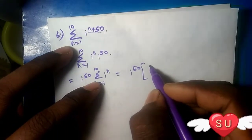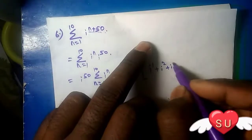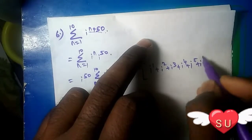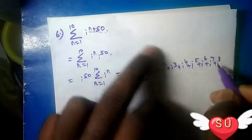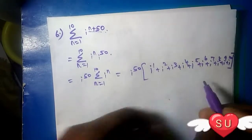Let's expand this: i^50 times (i^1 + i^2 + i^3 + i^4 + i^5 + i^6 + i^7 + i^8 + i^9 + i^10).